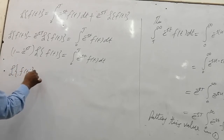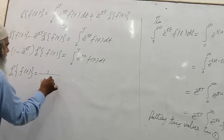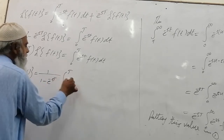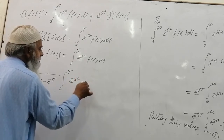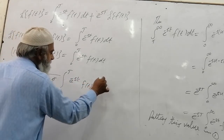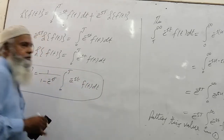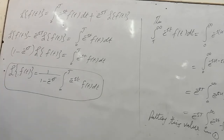Substituting back, the integral from 0 to T of e raised to the power minus st times f of t dt. This is the required formula for the Laplace transform of a periodic function. Now, if we use this formula, we have a question or example to work through.